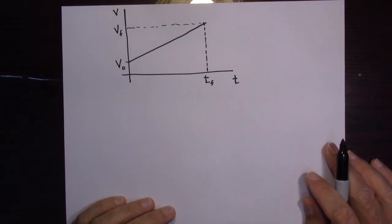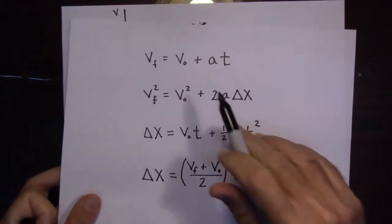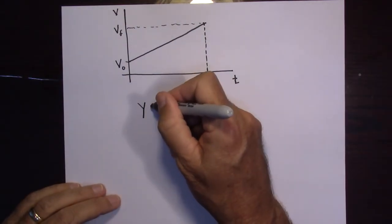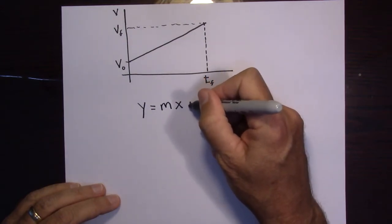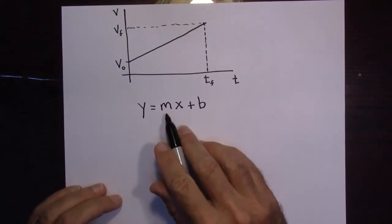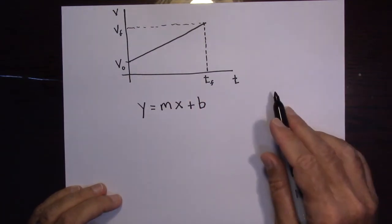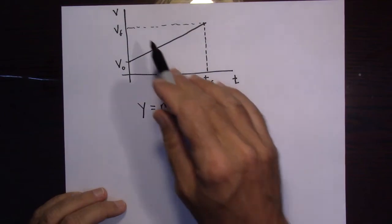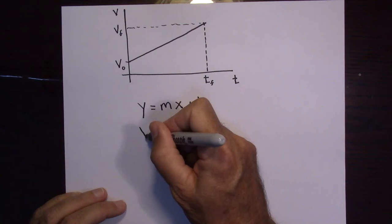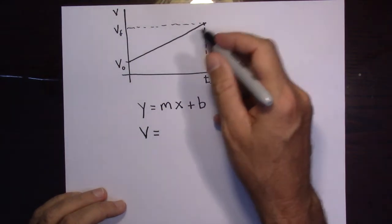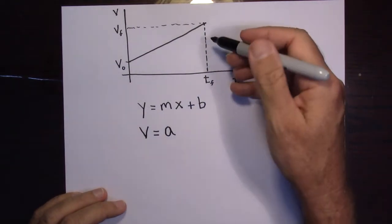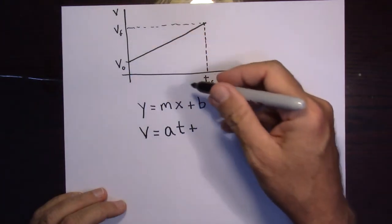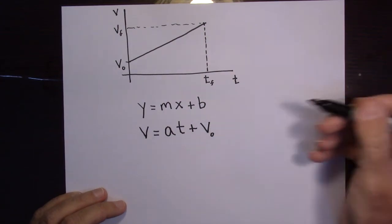To get the first equation, V_final = V_initial + AT, we start with y = mx + b — the slope-intercept equation for a straight line, where M is the slope and B is the y-intercept. We have a V versus T graph, not a Y versus X graph. So V replaces Y, A (acceleration) replaces M (the slope), T replaces X, and V naught (the y-intercept) replaces B. So I've derived that first equation.